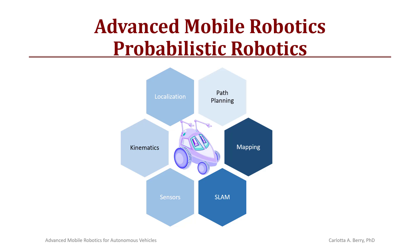Hello and welcome back. Today we will have lecture 6-1 on particle filters — in particular Bayes filters — and our example will be Monte Carlo Localization. As a review of the topics covered in our Advanced Mobile Robotics course with a focus on probabilistic robotics, the topics include localization, path planning, mapping, SLAM, kinematics, and sensors. So far we have covered kinematics and sensors, and right now we are in the middle of localization, with a hope to get to SLAM, path planning, and mapping by the end of the quarter.